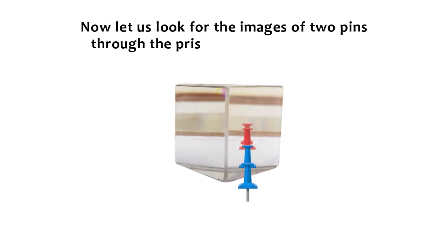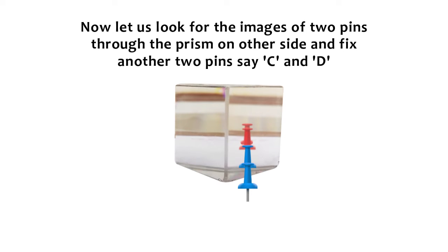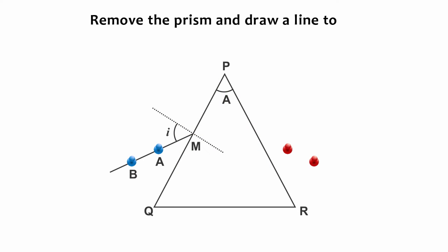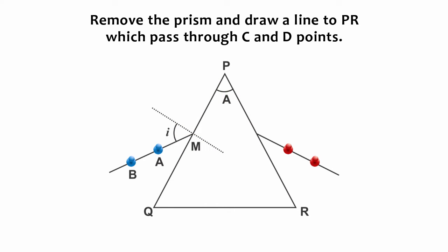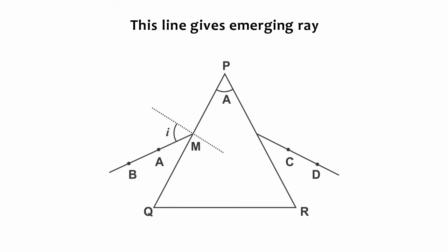Now, let us look for the images of two peans through the prism on another side and fix another two peans, C and D. Remove the prism and draw a line to PR which passes through the C and D points. This line gives the emerging ray.